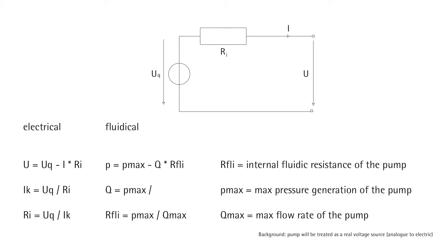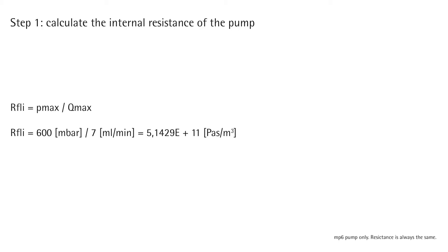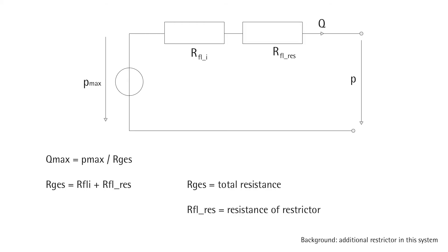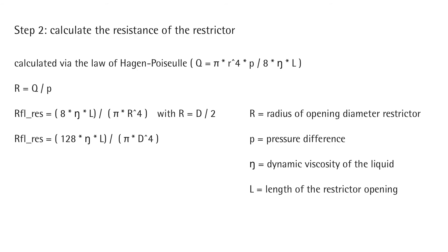Calculating a suitable restrictor can be done by treating the pump as an electrical circuit, calculating the internal fluidic resistance of the pump, adding the restrictor as a resistor, and applying the law of Hagen-Poiseuille to determine this resistance. The maximum flow rate is then dependent on the total resistance of the system.